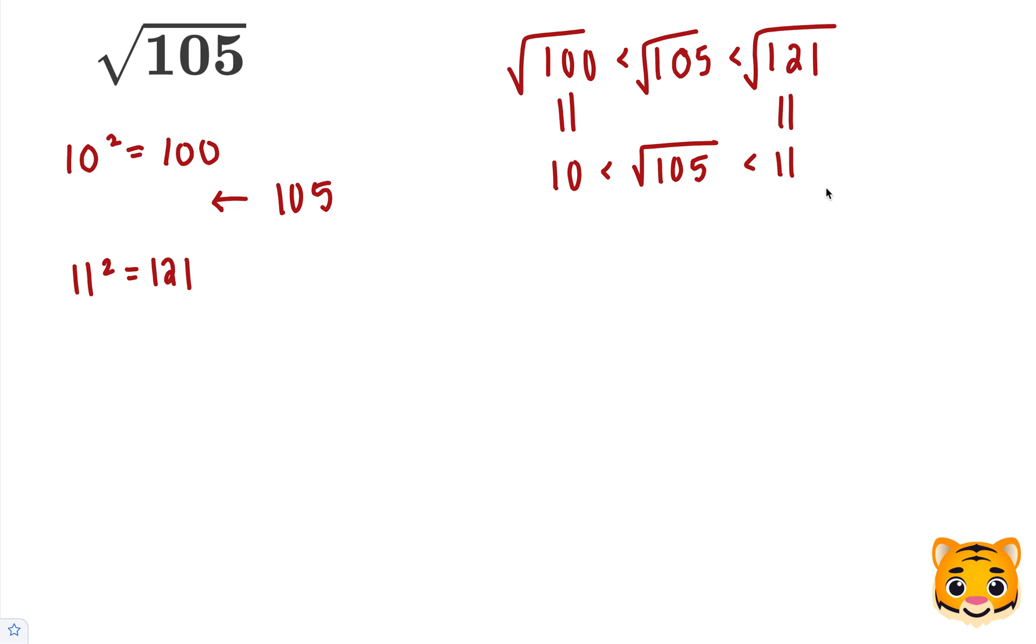Now we can see that the square root of 105 falls between 10 and 11. However, 105 is closer to 100, so the square root of 105 will be closer to 10. Let's try a tenths place decimal close to 10 that when multiplied by itself gives us 105.